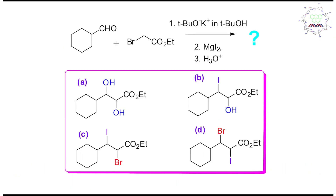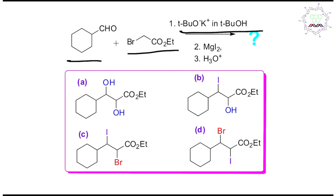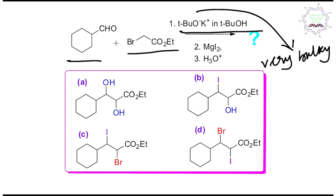If you look at this molecule, this is alpha-bromoester and one aldehyde. The uniqueness here is the base: potassium tertiary-butoxide in tertiary-butanol as solvent. We know that potassium tertiary-butoxide is a very bulky base, so it can only act as a base — not as a nucleophile. So it will abstract the most acidic proton.